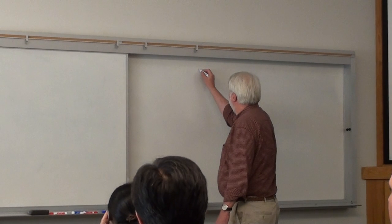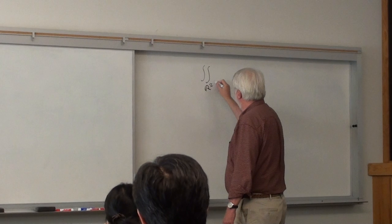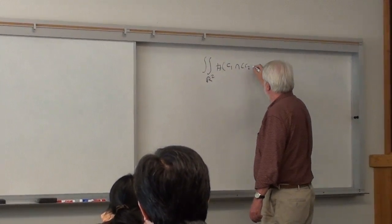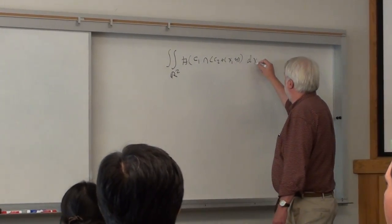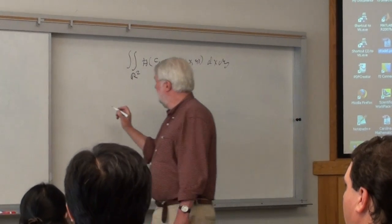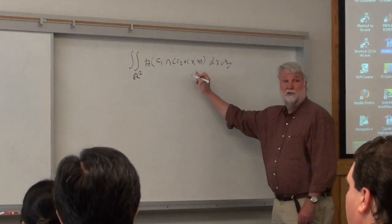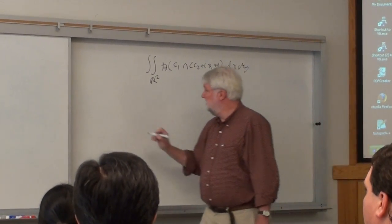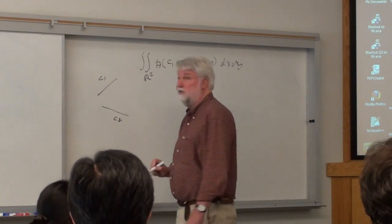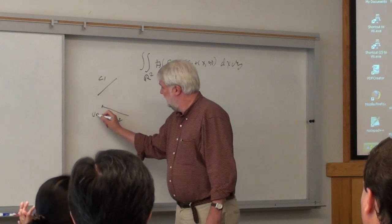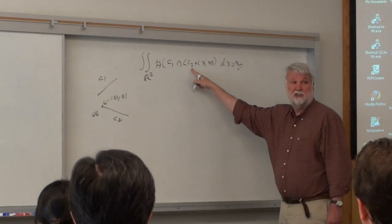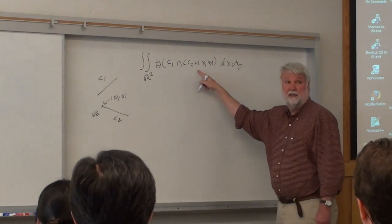So I want to understand if I take one of these curves and move it around, I'll calculate the intersections. In some sense, it's the average number of intersections of these two curves. Let's do an easier problem first. Suppose I'm going to look at the integral over R2 of just the number of points of intersection of C1 intersect C2 plus XY dxdy. So I'm going to take one curve, translate it, and see what happens when it gets that number of points of intersection.